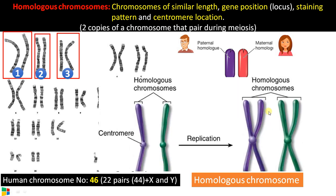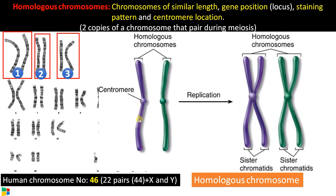I would like to add one more point. Before replication, there is a single chromatid that makes a chromosome. After replication — that is, in the cell cycle after S phase or synthetic phase — before meiosis or mitosis, we will have a chromosome with two chromatids held at the centromeric region, and these chromatids are called sister chromatids. In meiosis, crossing over is happening between the non-sister chromatids of the homologous chromosomes — between this violet and this green chromatid.